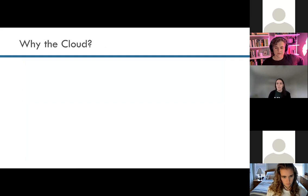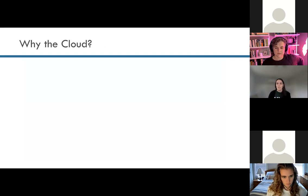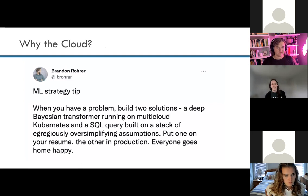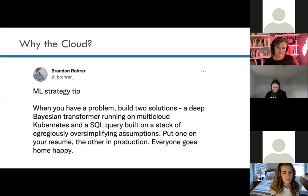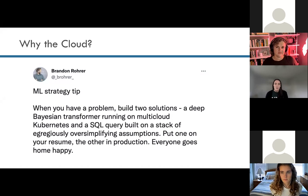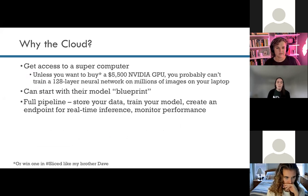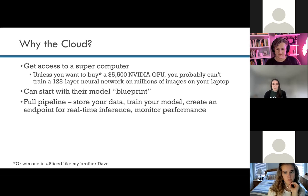Why should we think about using the cloud instead of just our local machine for doing machine learning? As Brandon says, one big benefit is putting it on your resume — you can build a deep Bayesian transformer running on multi-cloud Kubernetes versus a SQL query built on a stack of egregiously oversimplifying assumptions. Brandon's joke is that often you may not need the fanciest thing to go into production, but the fancy thing does look good on your resume. But in all seriousness, the cloud gets you access to a supercomputer. You are probably unable on your local laptop to train a 128-layer neural network on millions of images, and that's simply not feasible unless you want to buy your own GPU for thousands of dollars.